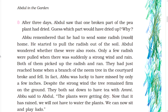Both of them picked up the radish and ran. They had just reached home when a branch of the neem tree in the courtyard broke and fell. Abu was lucky to have missed it by only a few inches. Despite the strong wind, the tree remained firm on the ground. They both sat down to have tea with Ammi.